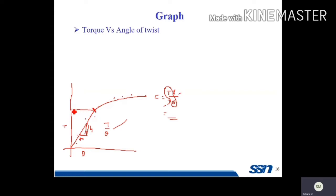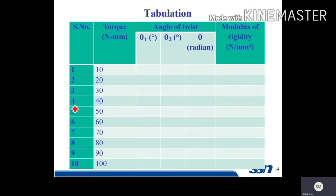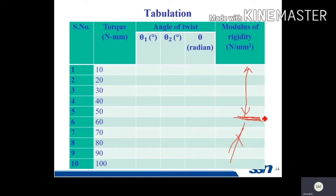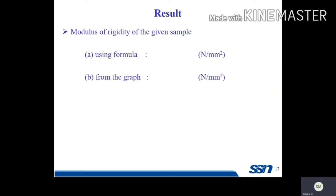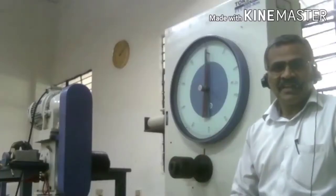The limit of proportionality corresponds to a certain torque value — say it is 50 Newton meters. Go to the table, and from the 10 modulus of rigidity values recorded, only take the values within the proportional limit for averaging. Find the average of those values only. Compare this average C value with the value obtained from the graph. Using the formula, you calculate modulus of rigidity within the proportional limit; similarly from the graph, you record it. That is how you complete this experiment — torsion test on mild steel rod.